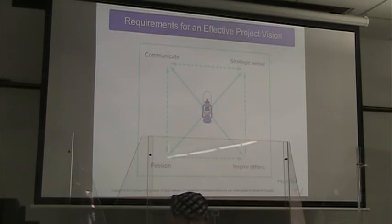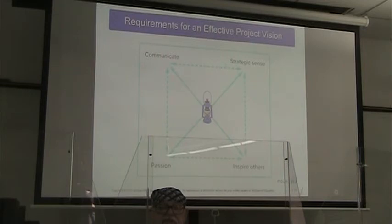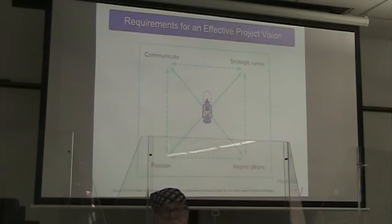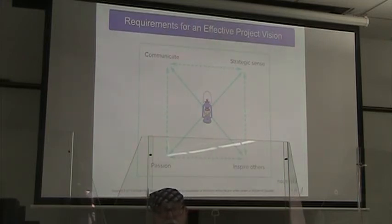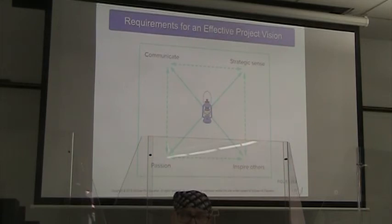What do we need to have an effective project vision? Our illustration here is of an old-fashioned oil lamp. We have to communicate. We have to have a sense of our strategy. We want to inspire others and have passion for what we're doing. There is nothing I hate more than having a job where when I get up in the morning I'm dreading going to work. I have quit many jobs because they inspired exactly that feeling.